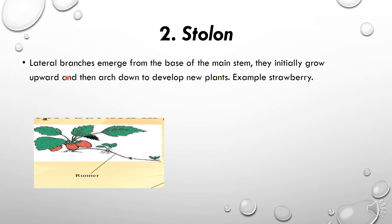Stolon: lateral branches emerge from the base of the main stem, as you can see here. They initially grow upward and then arc down, running along the ground to develop new plants. In the case of strawberry, the stem is like a runner — it first grows a little height above the ground, and then when the fruit comes, it arcs back down. This type of stem is called a stolon.